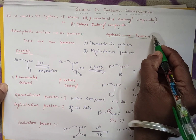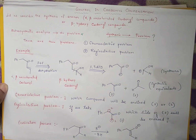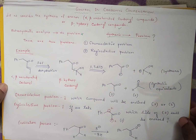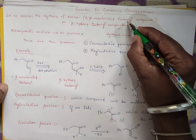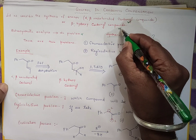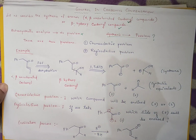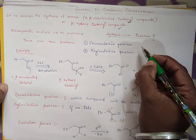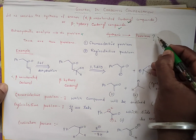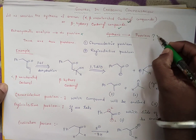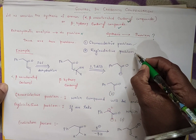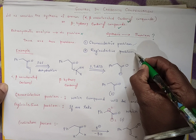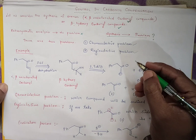So where is the problem? During the synthesis of alpha-beta-unsaturated carbonyl compounds and beta-hydroxy carbonyl compounds. So we should know the problem. That is: one is a chemoselective problem and one more is a regioselective problem.